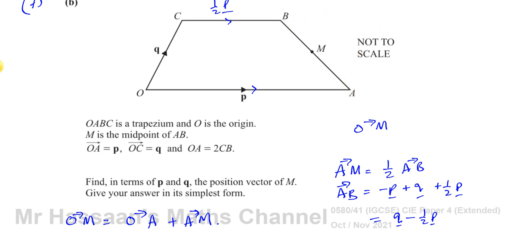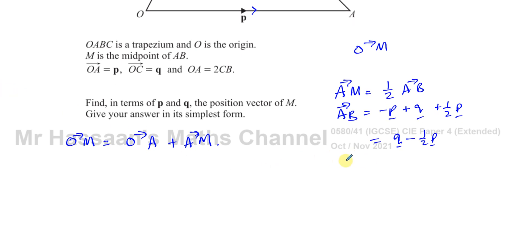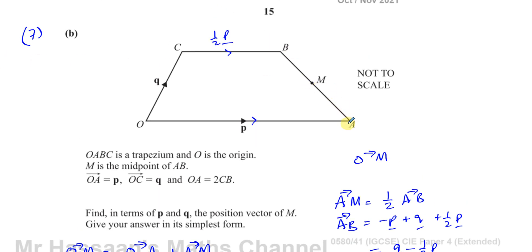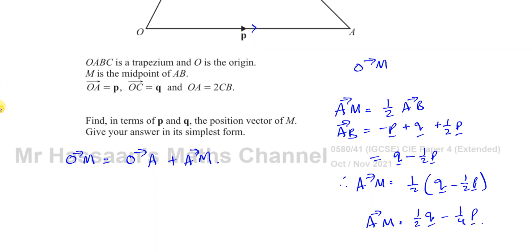Therefore A to M is ½ of (q minus ½p), so A to M equals ½q minus ¼p. That's the vector from A to M — half of A to B. A to B is minus p plus q plus ½p, giving q minus ½p, and A to M is half of that, so ½q minus ¼p.